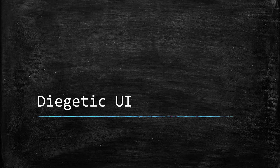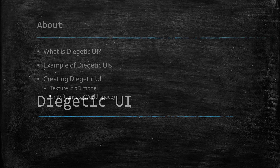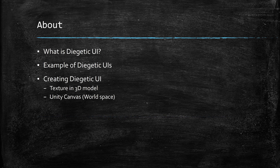Hello everyone! Today's tutorial we're going to talk about diegetic UI. What we're going to cover is what exactly diegetic UI is, some examples of diegetic UIs, and how to create them. One method is texturing, which is something covered in Blender, so we won't cover that. Instead, we'll focus on using Unity Canvas and setting it to world space.